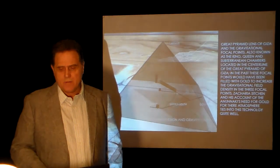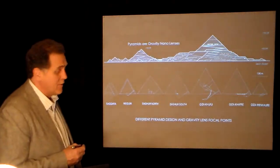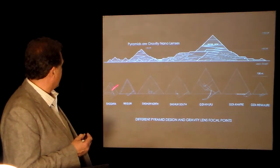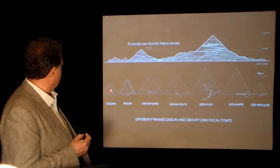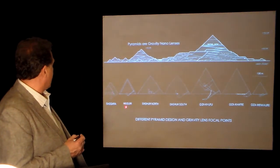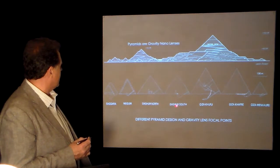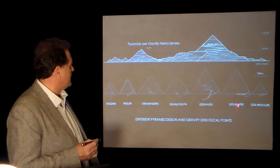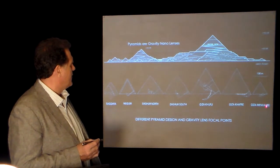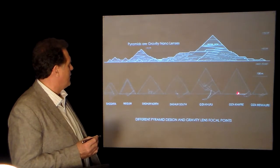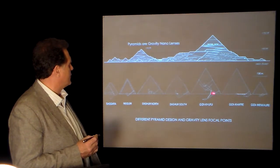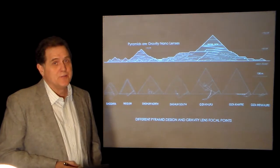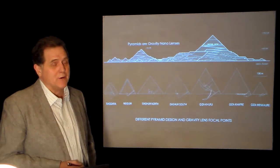Moving right along to speed of light. Sorry for dropping the ball on that one. Again, we have Saqqara, Medium, Dashur, Dashur South, North, Giza Khufu, Giza Khafre, Menkaure. They all have little chambers in there. They're not tombs. They're focal points.